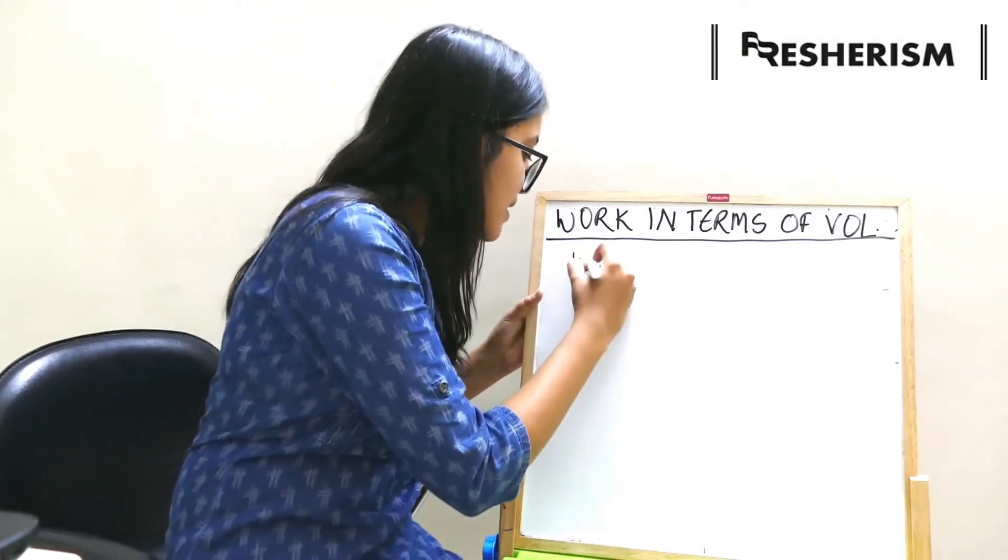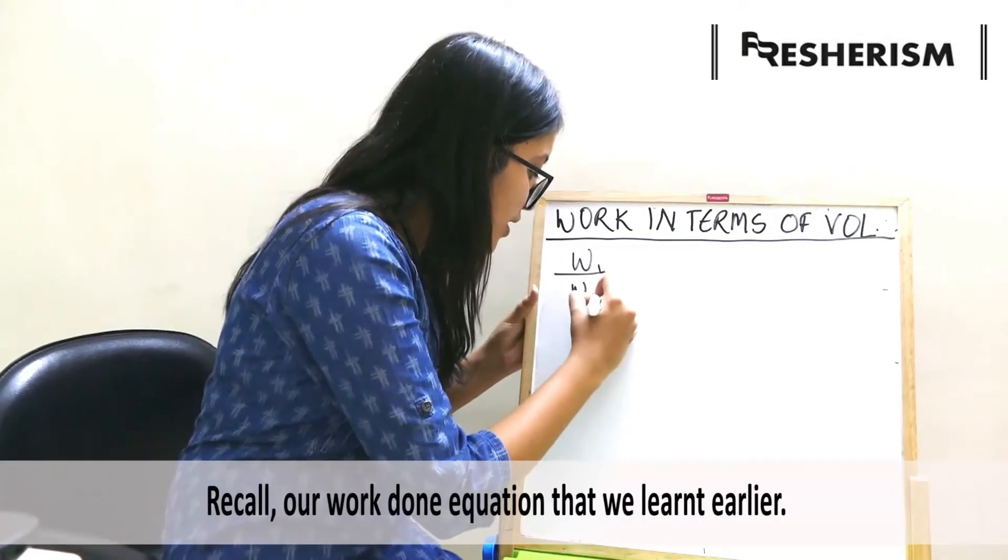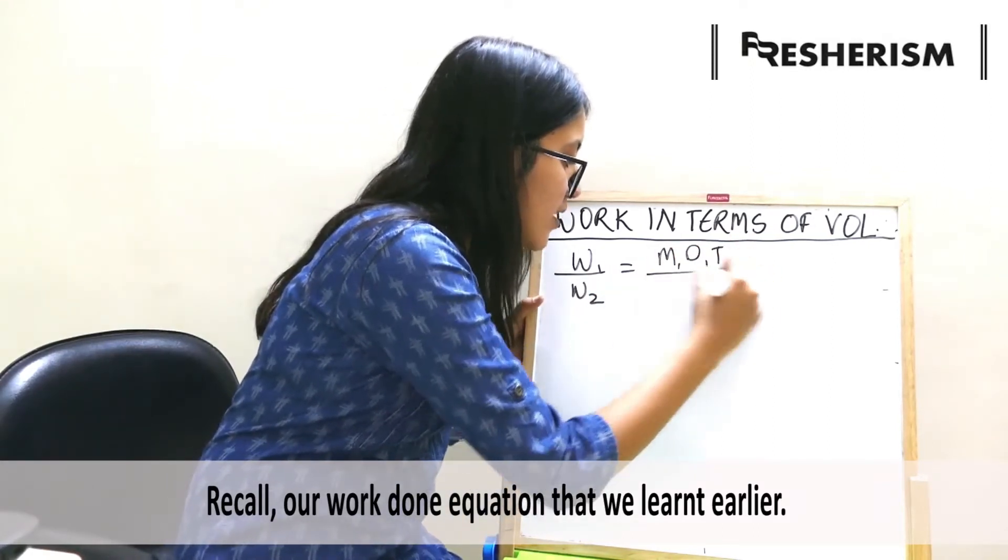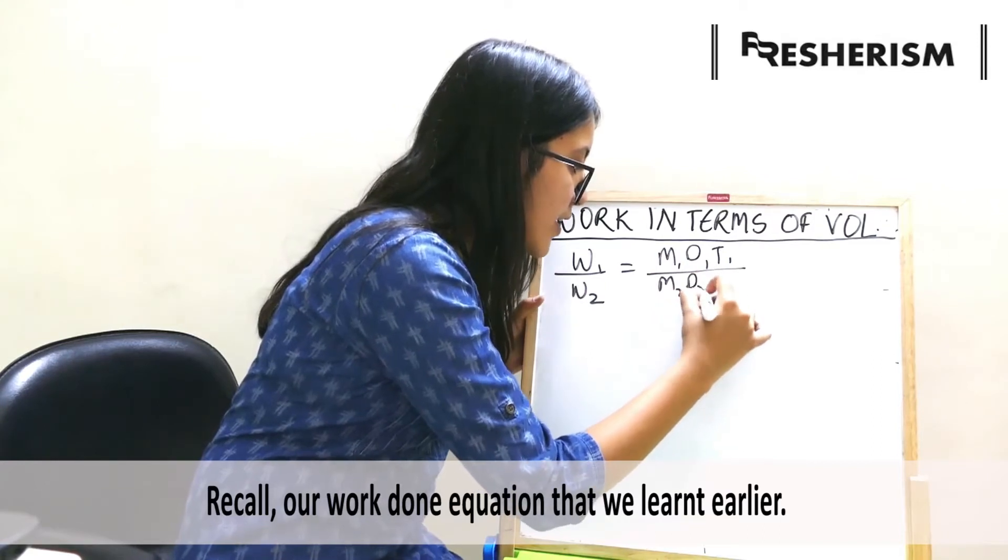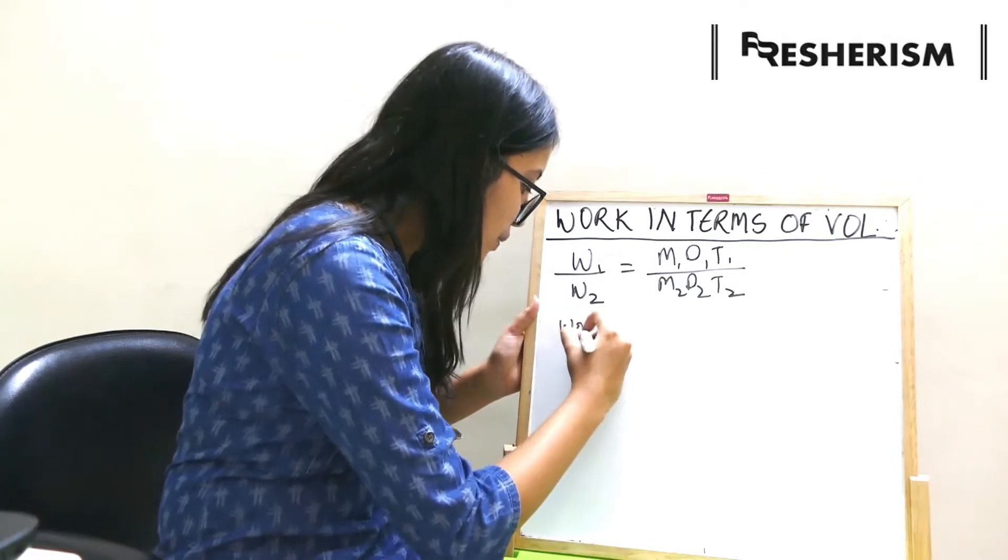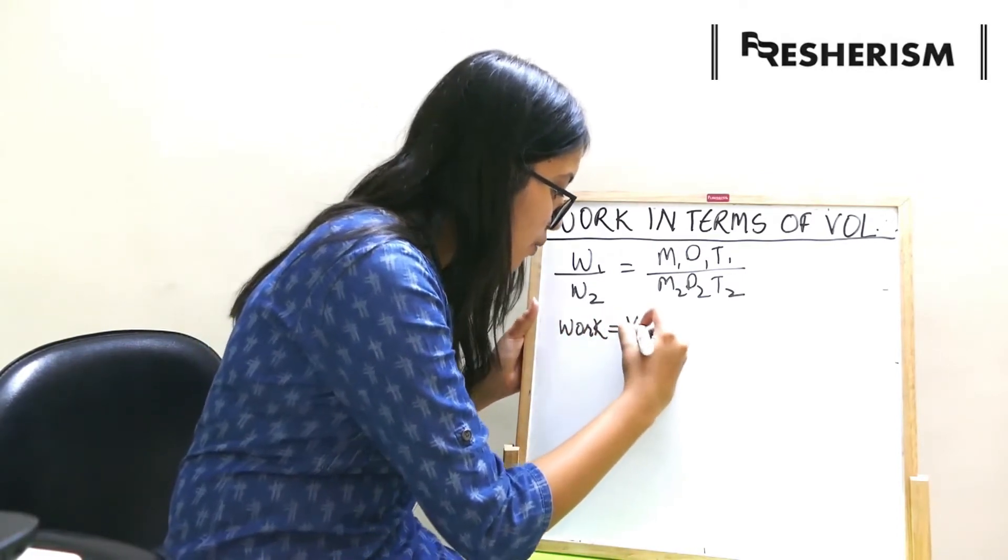If you recall, we studied that w1 upon w2 is equal to m1 d1 t1 upon m2 into d2 into t2. Now, in these types of questions, we consider that work is equal to volume.